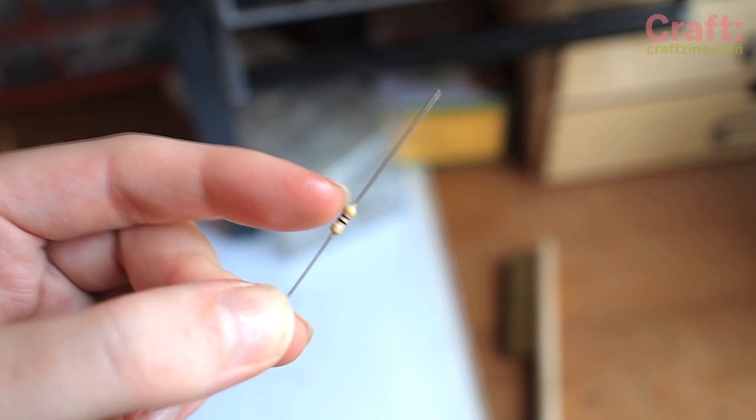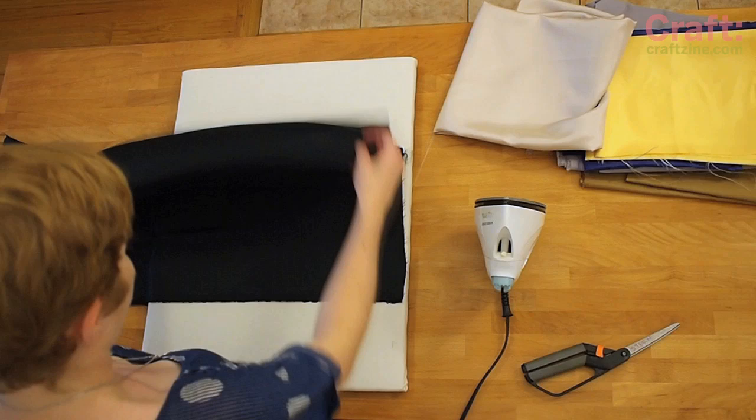Resistors are used in circuits to limit or resist the flow of electricity. The colored stripes indicate the value as well as the expected accuracy of the resistor.